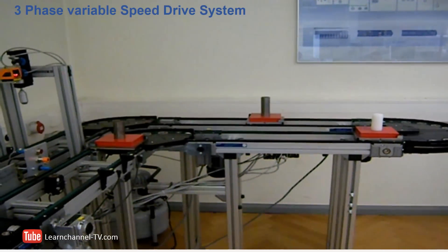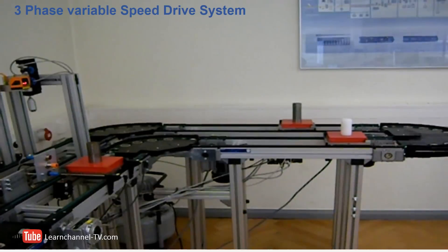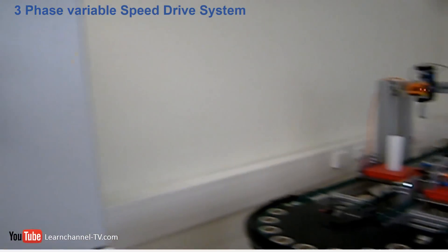The conveyor belt is driven by three-phase AC motors. How is it possible that this line can start and stop so smoothly? Let's have a look at the control.